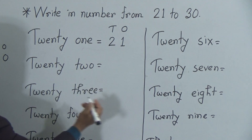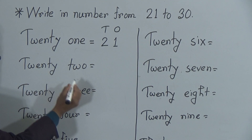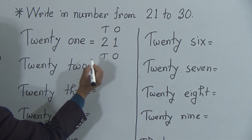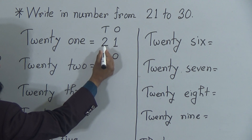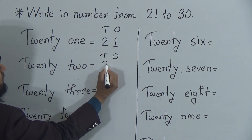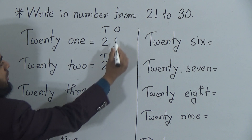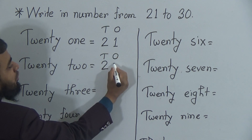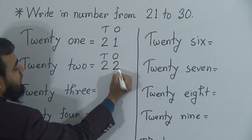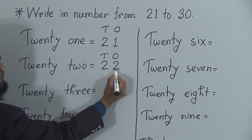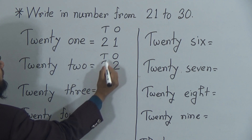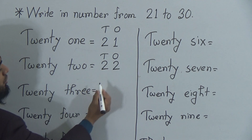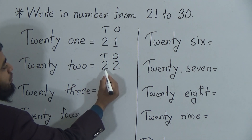The next number is twenty-two. To write down twenty-two, we need to know the place value: tens and ones. In the tens position, the number remains the same — two stays. In the ones position, it increases by one, so it was one, now it will be two. Two and two makes twenty-two — two tens and two ones makes the number twenty-two.